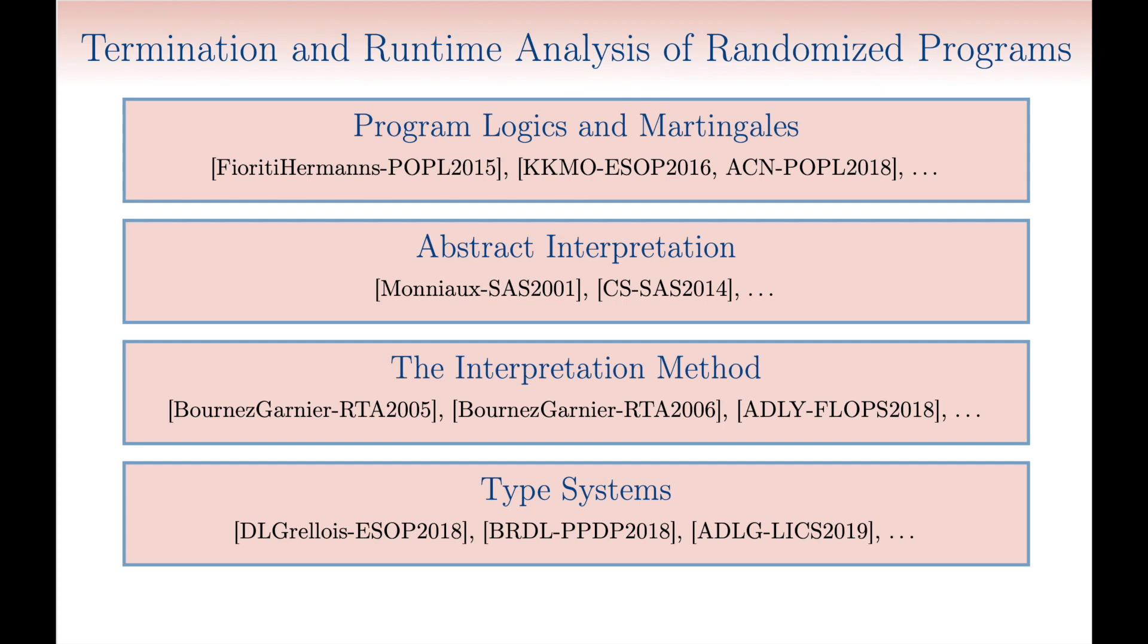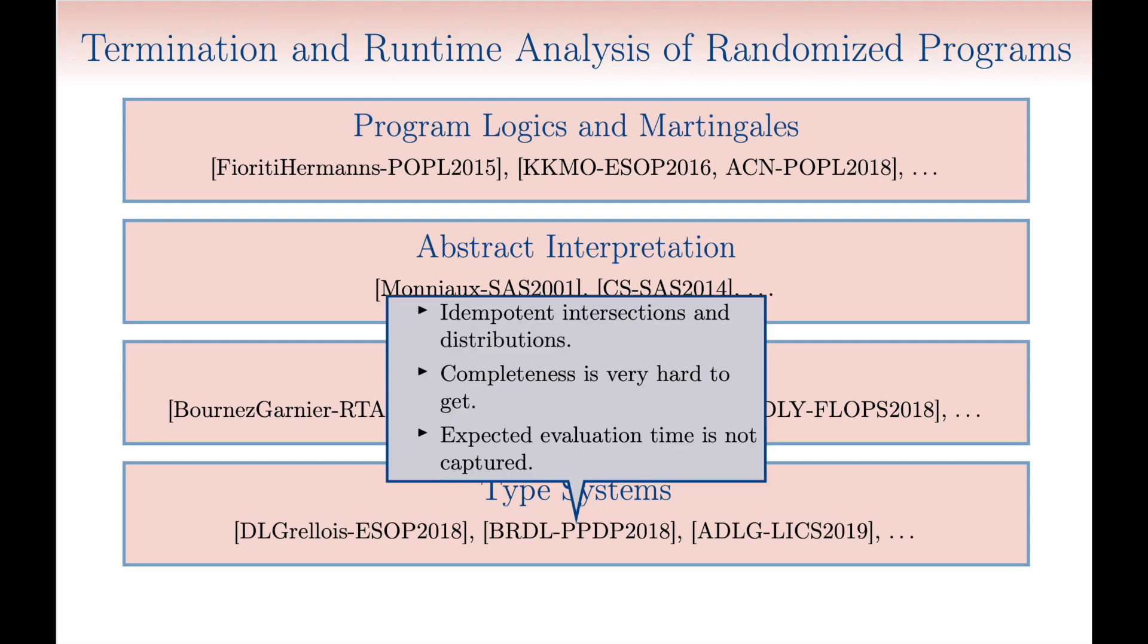Among the rather sparse literature on the subject, one should certainly mention a PPDP paper by Brovard and the first author on intersection types and probabilistic programs, which however suffers from some limitations. In particular, since everything is idempotent, completeness is very hard to get, while expected evaluation times are simply not taken into account by typing.